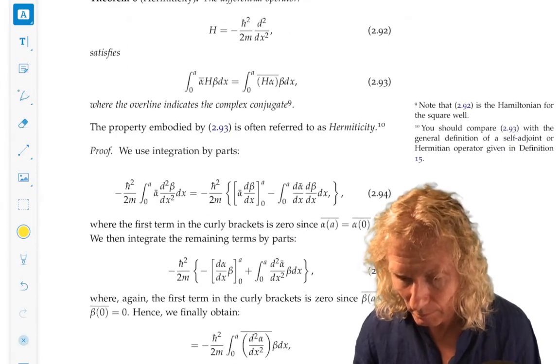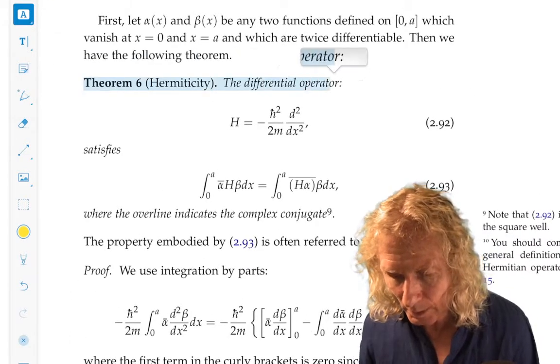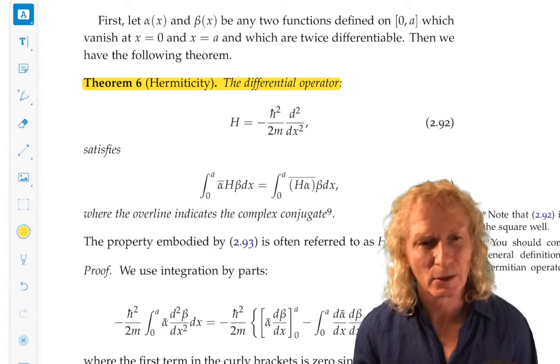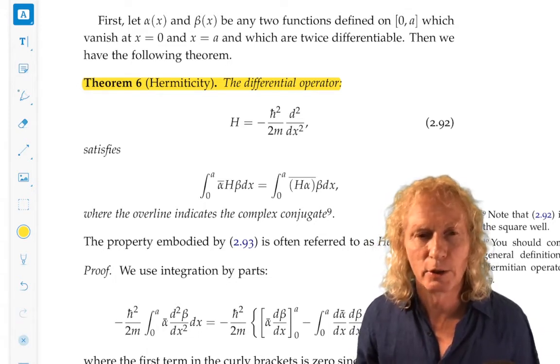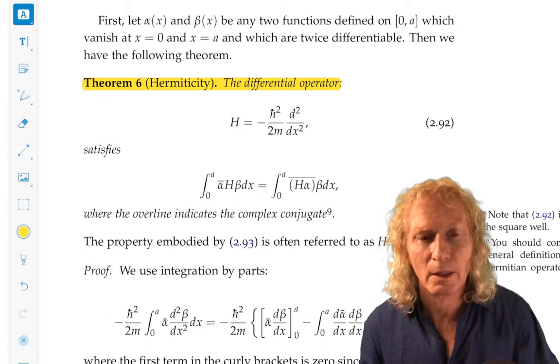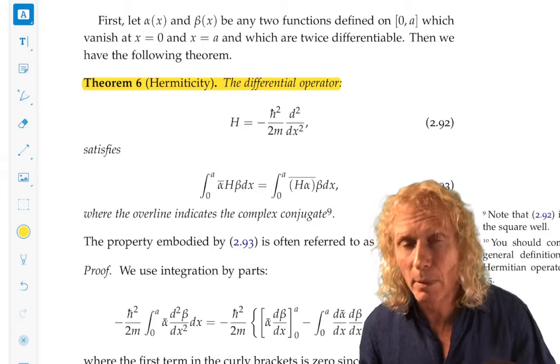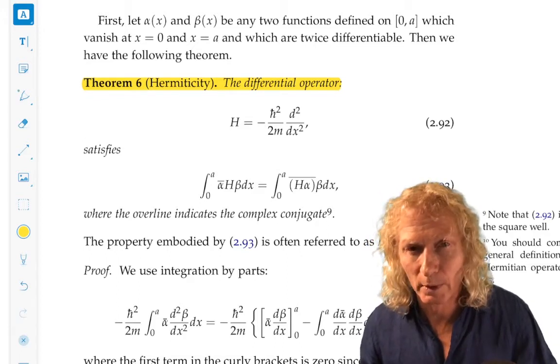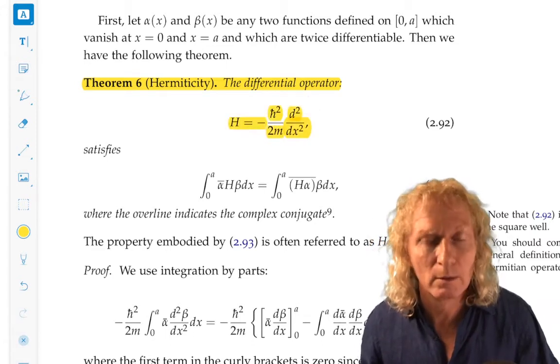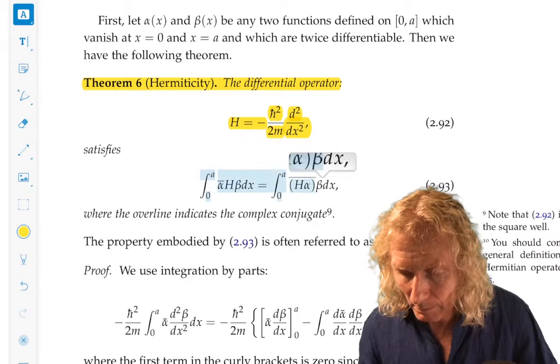Now this theorem six is really important, and it's referred to as hermeticity. I said earlier we have this tension between the term self-adjoint and hermitian. You just have to get used to that. This is one area where this particular result is generally always referred to as hermeticity, but it's related to the self-adjoint properties that we derived earlier. So for this particular Hamiltonian, this is the Hamiltonian for the square well between zero and A, we have this equality.